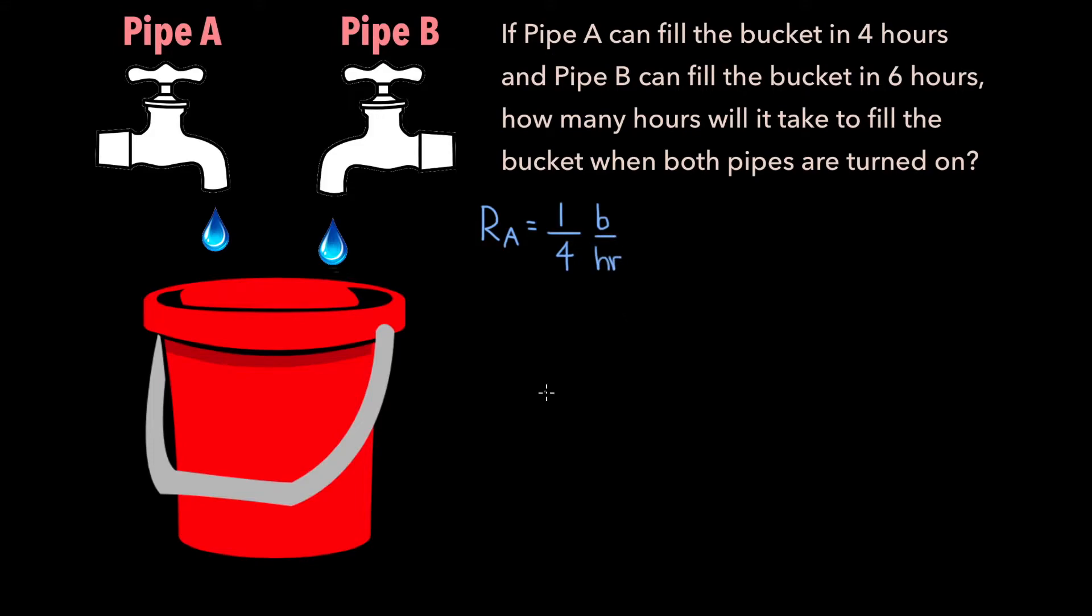By the same logic, if pipe B takes 6 hours to fill the bucket, its filling rate, R sub B, is 1 sixth buckets per hour.